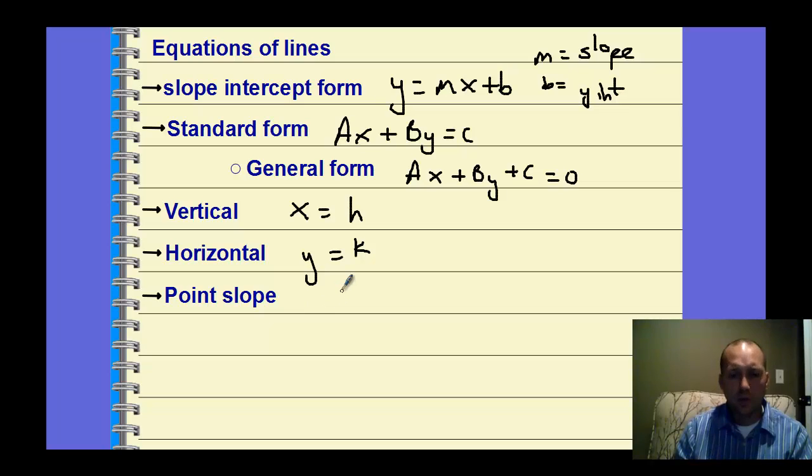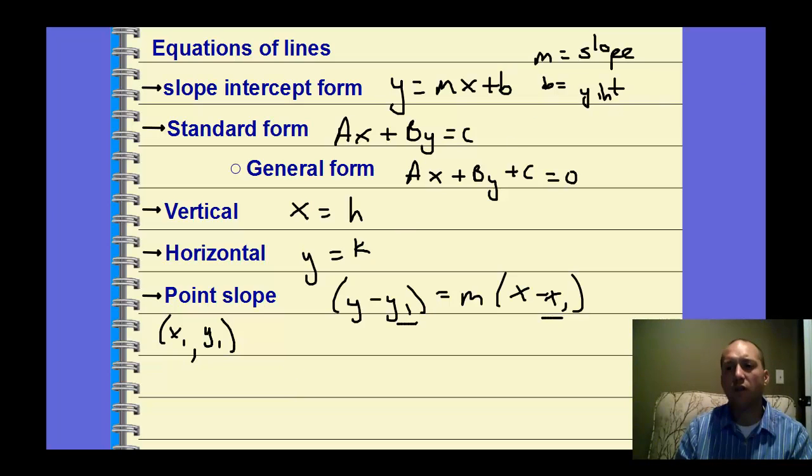And then point slope form, y minus y1 equals m times the quantity of x minus x1. And that's given, so you're given the point x1, y1. So this point x1, y1 is plugged in in those two spots. And then if you just simplify it, you'll find the equation in slope intercept form. So these are the different forms for a linear equation that you should recall from previous math.